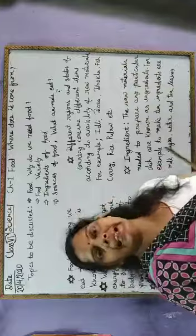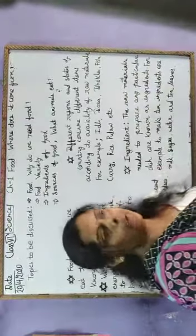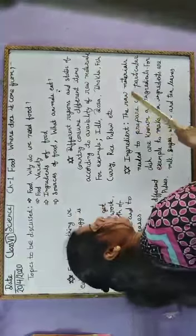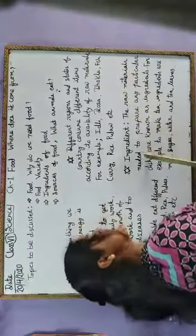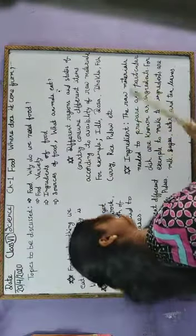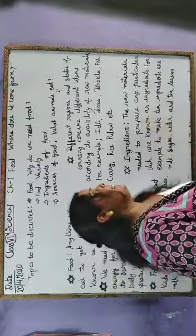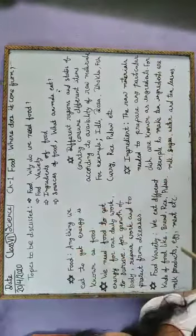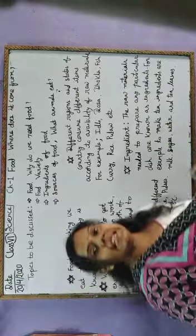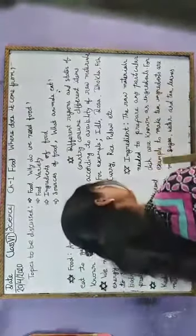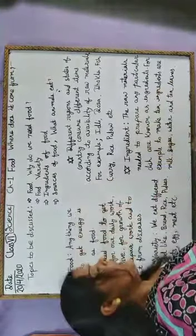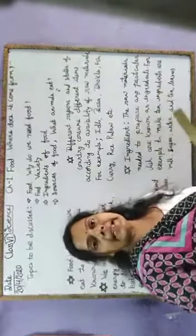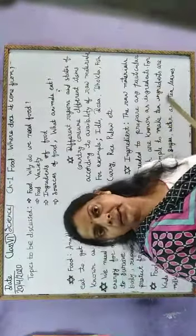Raw materials are actually the ingredients of food. The raw materials needed to prepare any particular dish are known as ingredients. For example, to make tea we need sugar, milk, water, and tea leaves — these are the ingredients of tea.